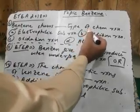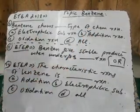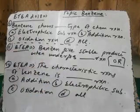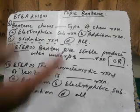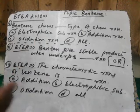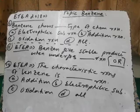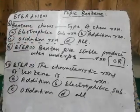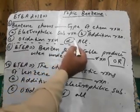Benzene undergoes electrophilic substitution, and it also undergoes addition reactions as given in our course. Hydrogenation: benzene + H₂ gives cyclohexane. Addition of chlorine gives hexachlorocyclohexane. Oxidation: benzene on oxidation gives maleic anhydride, which on hydrolysis gives maleic acid.